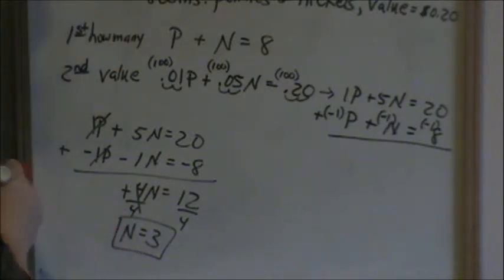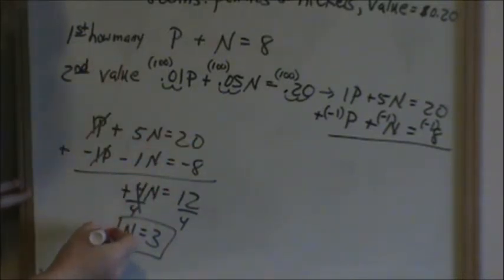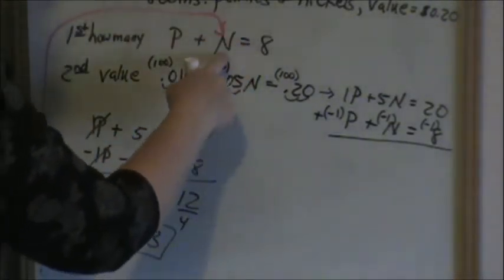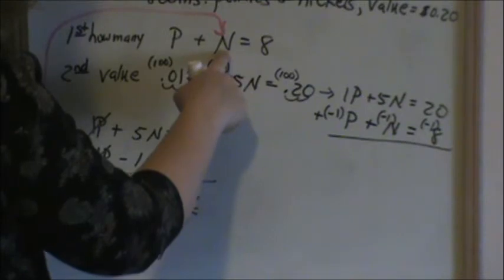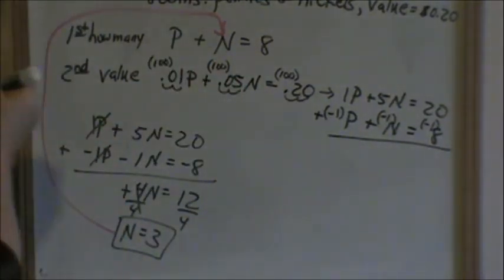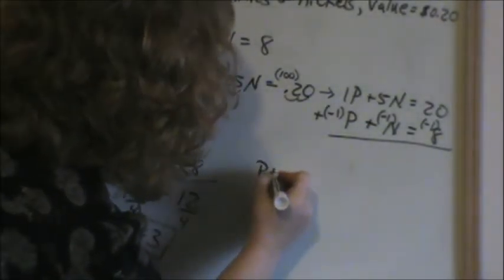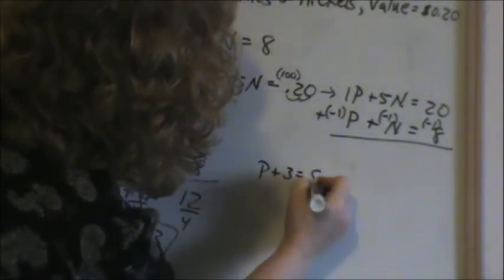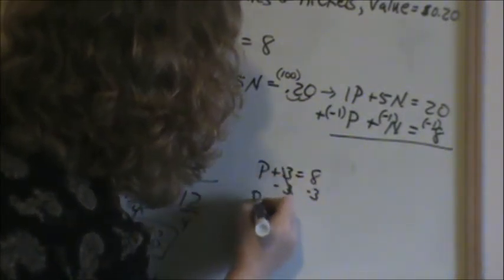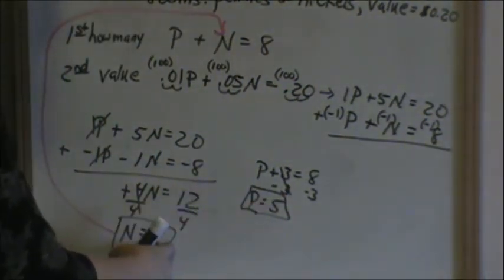So now I've got 3 nickels. To figure out how many pennies I have, if I have a total of 8 coins and 3 nickels, obviously we know we have 5 pennies. But to show it algebraically: P plus 3 equals 8. Subtract 3 from both sides, and P equals 5. So I have 5 pennies, for a total of 8 coins.